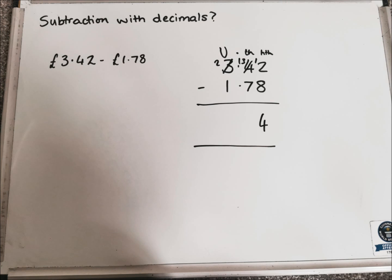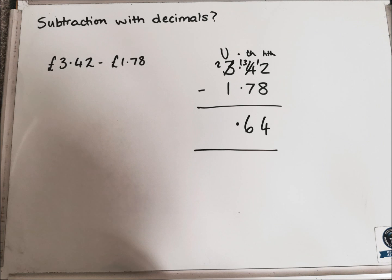In the tenths column, we're going to have to borrow again, because we were going to have to do 3 take away 7. So we borrow from the units. So the units becomes 2, and we move 1 over into the tenths column, so we've now got 13. So 13 take away 7 is 6.